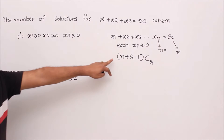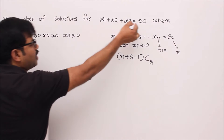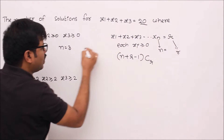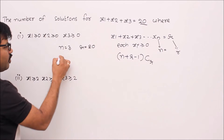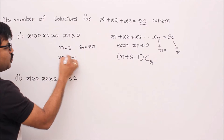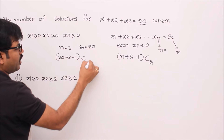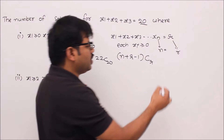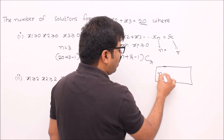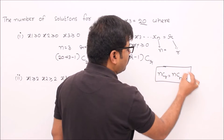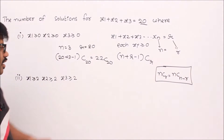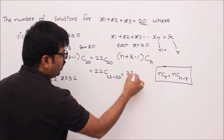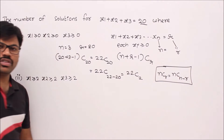Let me apply this formula to the problem. We have x1 plus x2 plus x3 equal to 20, so n equals 3 and r equals 20. Applying the formula gives 20 plus 3 minus 1 choose 20, which is 22C20. Remember that nCr always equals nC(n minus r), so 22C20 becomes 22C2. That is the final answer.